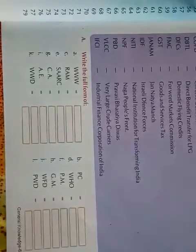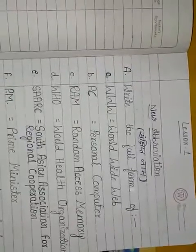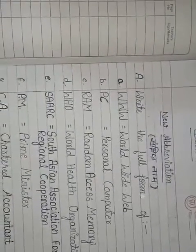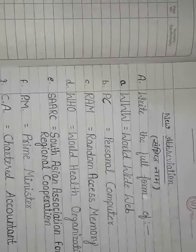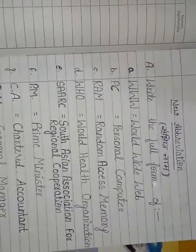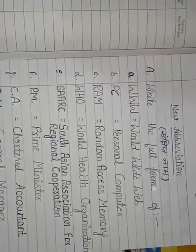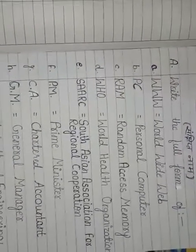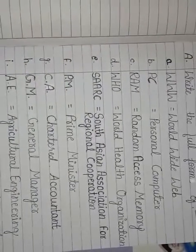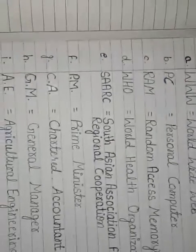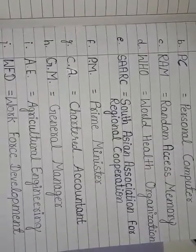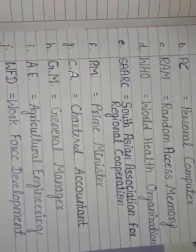Let's see your exercise which is given below. First, WWW — World Wide Web. Second, PC — Personal Computer. Third, RAM — Random Access Memory. Fourth, WHO — World Health Organization. Fifth, SAARC — South Asian Association for Regional Cooperation.